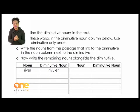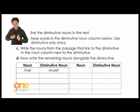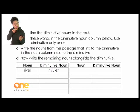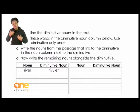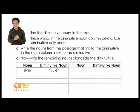You answer the questions from A to D. For instance, the first one says: 'Underline the diminutive nouns in the text.' Go back to the passage on page five and as you read through, you will find quite a number of diminutives to underline. Then for D: 'Write these words in the diminutive noun column below — use each diminutive only once.'